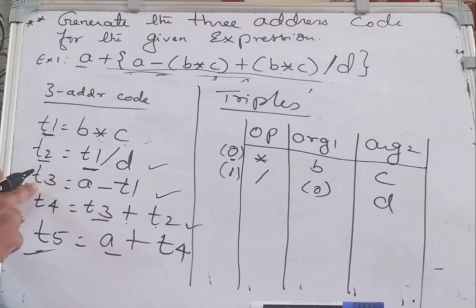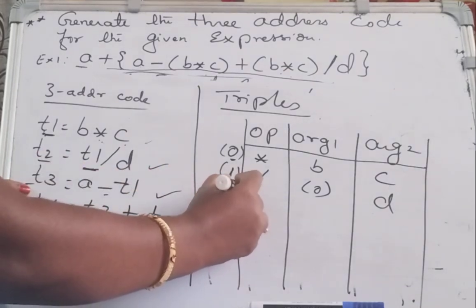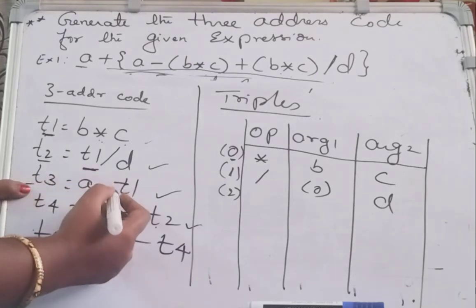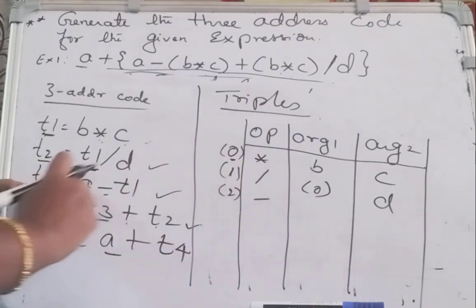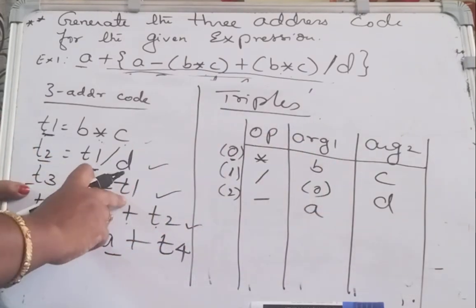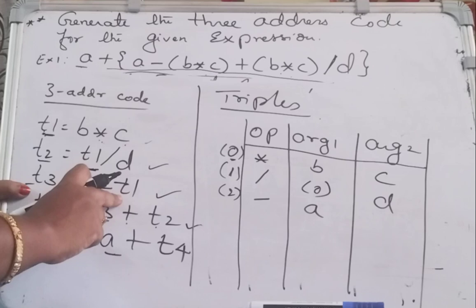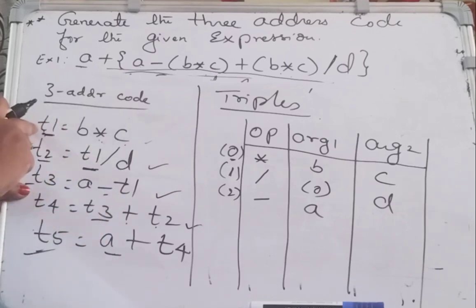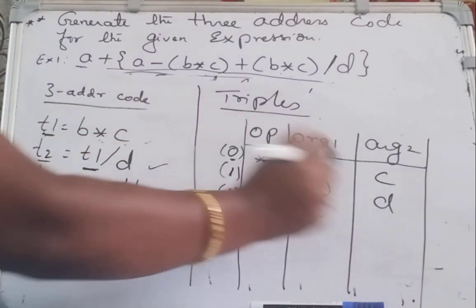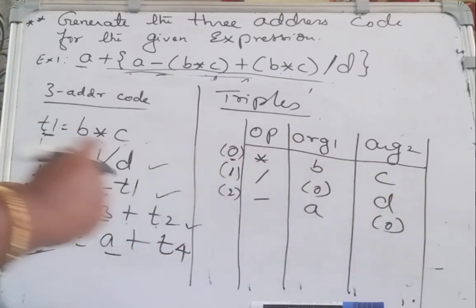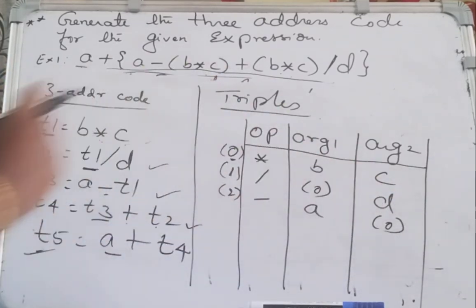The next instruction is address 2: operator is minus, argument one is A. Next we have T1 — but T1 means you should write the address of that instruction. T1's address is 0, so write 0 for argument two. T1 holds the B star C result, so we specify its address.